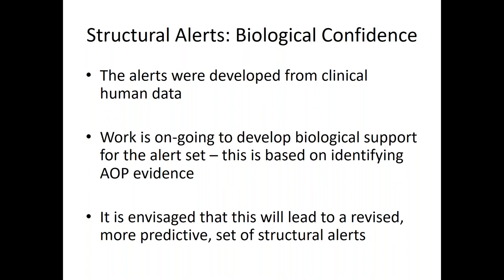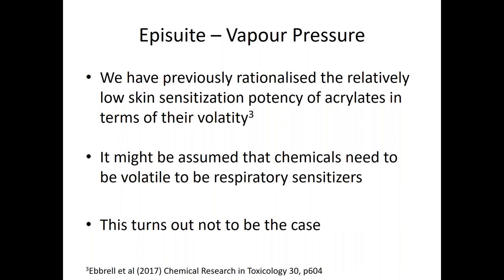We're trying to improve our confidence in the structural alert set with ongoing work led by Christie and co-workers, developing the underlying evidence from the AOP in support of each alert. We're trying to pull AOP evidence for each alert, perhaps remove some where there's not much evidence, and build confidence in alerts where there is more. Regarding vapor pressure — we certainly thought it might be an important distinguisher for respiratory sensitizers, and we've used vapor pressure to rationalize skin sensitization potency previously.